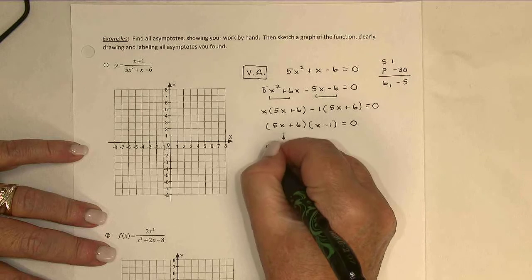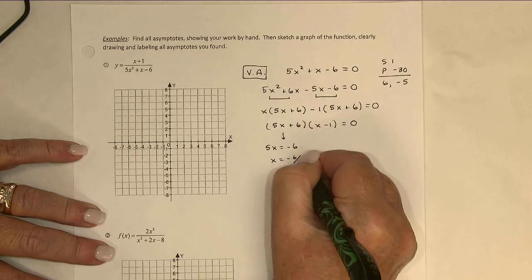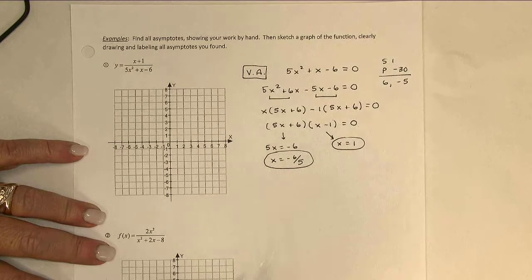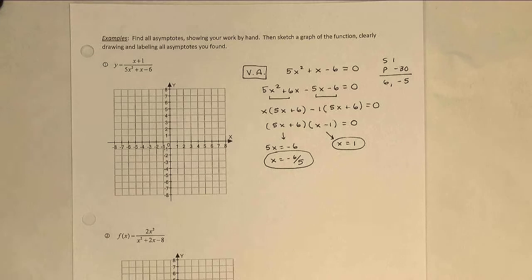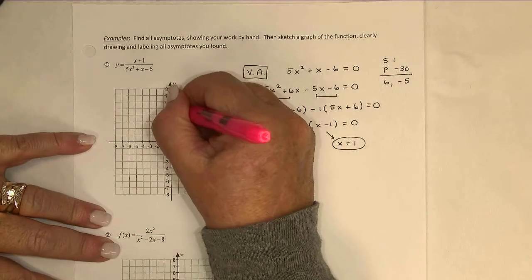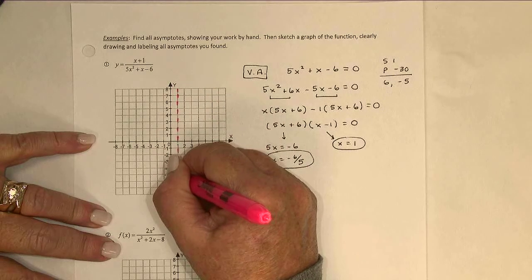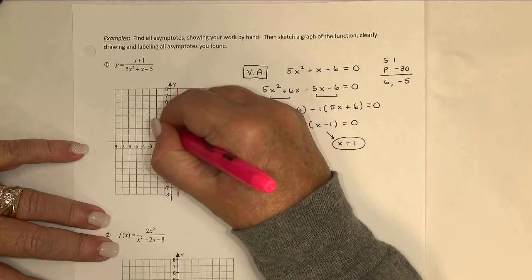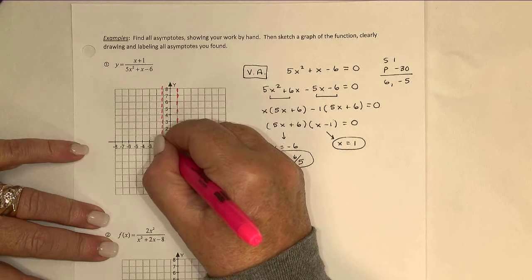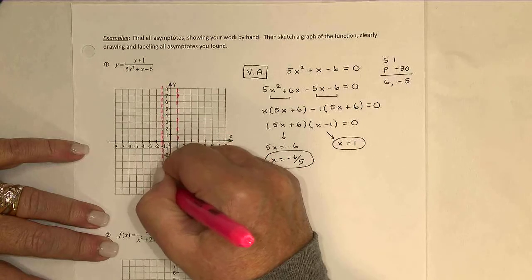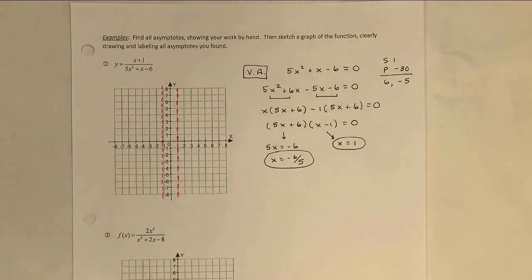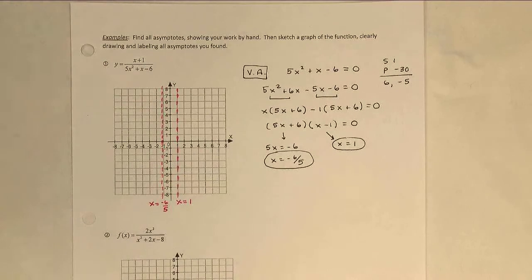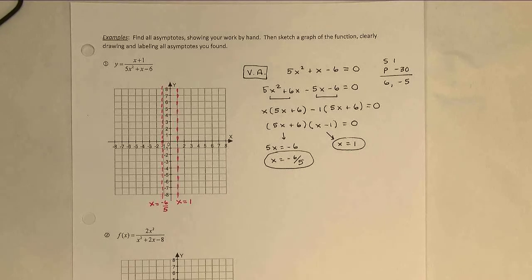So on this one, we'd have 5x equals negative 6, or x is negative 6 fifths. And over here, we'd have x equals 1. Those are the equations of my two vertical asymptotes. So I'm going to go ahead and put those in right now. I'll have a vertical asymptote at x equal 1, and another one at x equal negative 6 fifths, so just past negative 1. And the problem said, draw and label all asymptotes. So this is x equals 1. This is x equals negative 6 fifths.